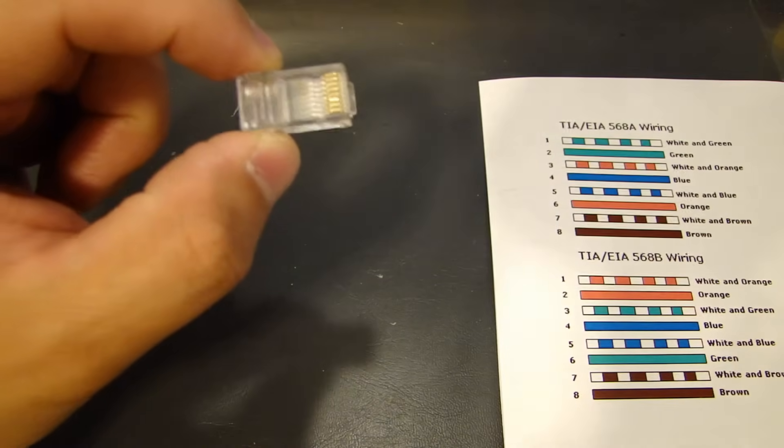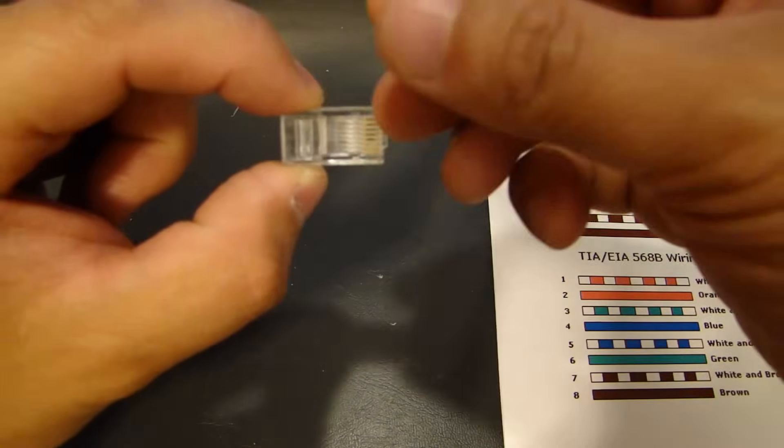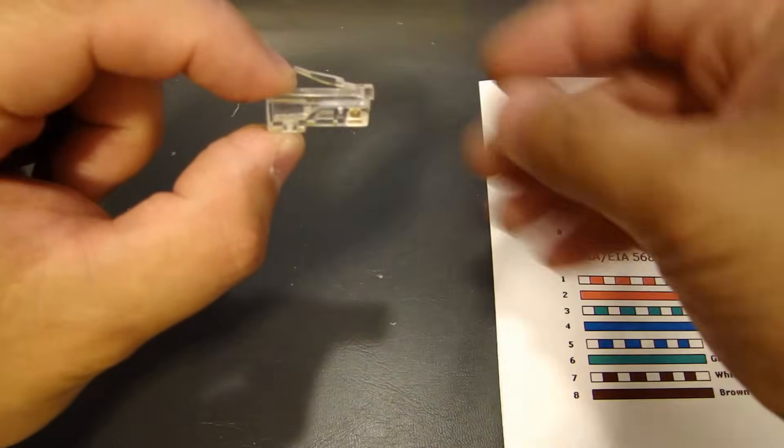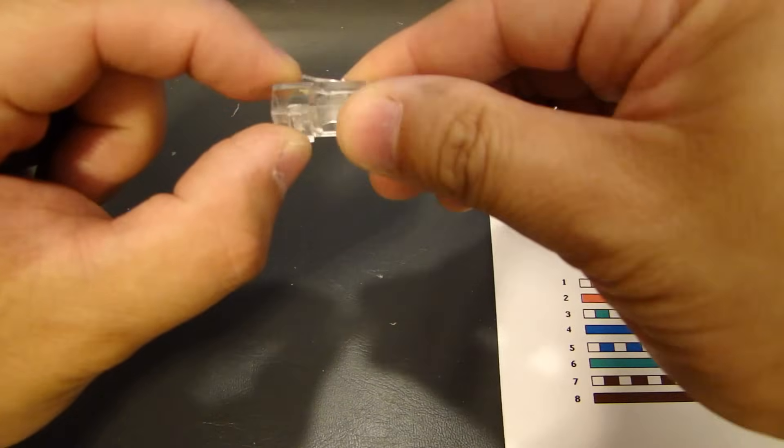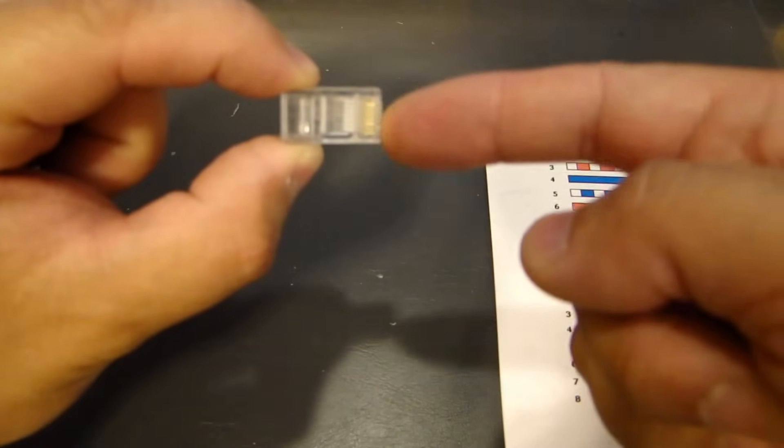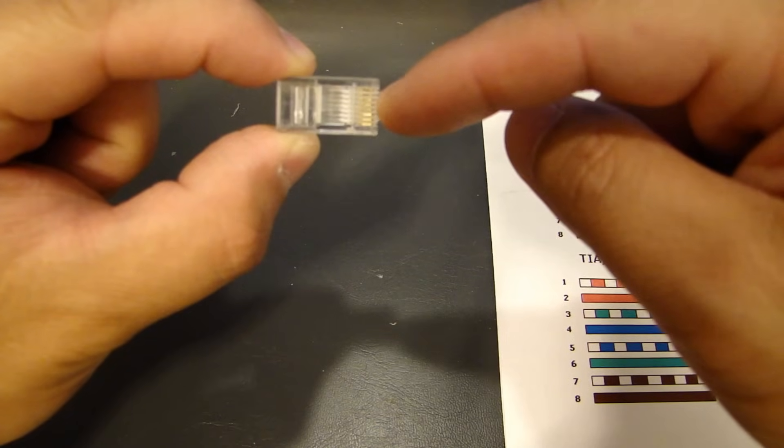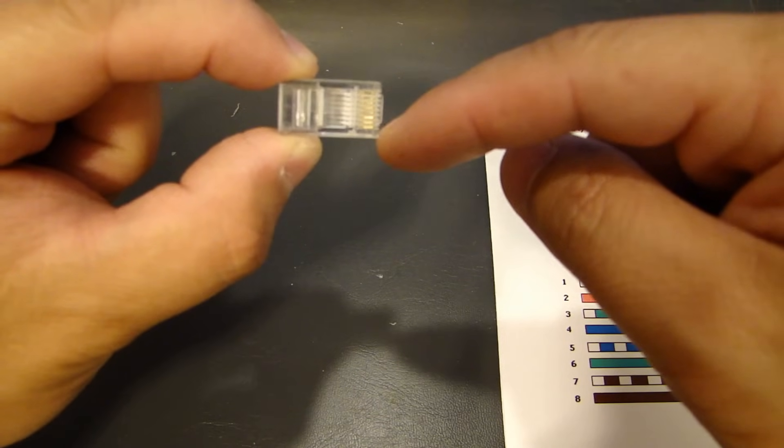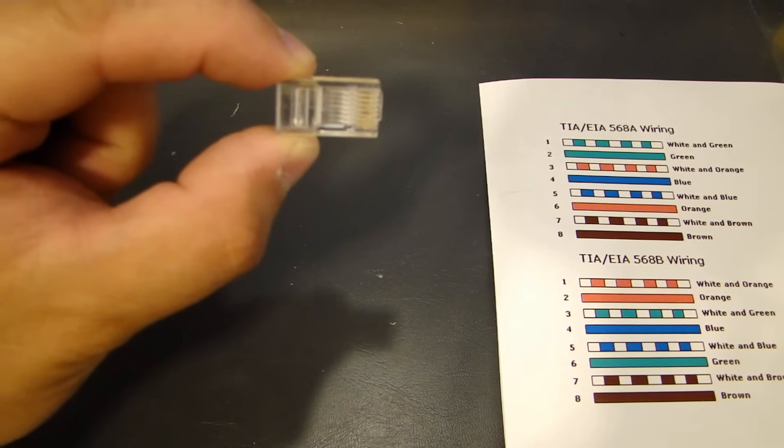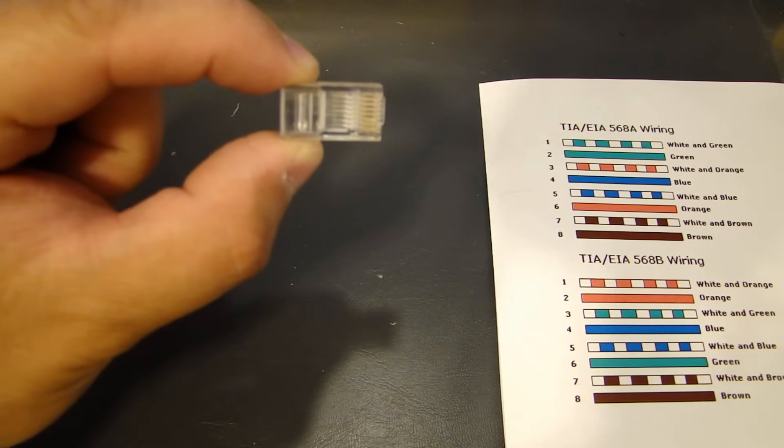And to know which one is pin 1 to 8, what you want to do is, if you have it this way, flip this over. So the cable is coming in on the left side, and the metal pins on the right side, starting from the top, is pin 1, 2, 3, 4, 5, 6, 7, 8. That's how you count the pins on the RJ45 connector.